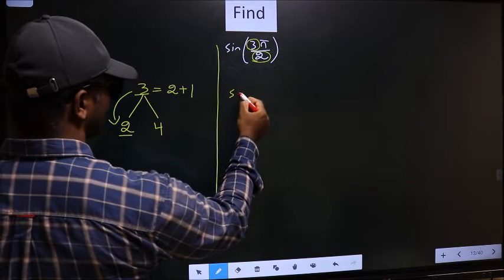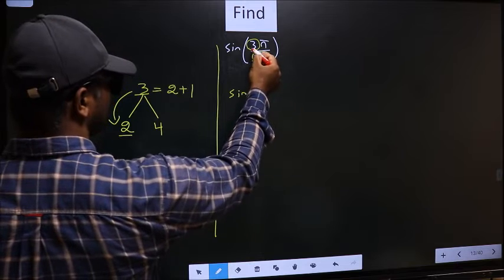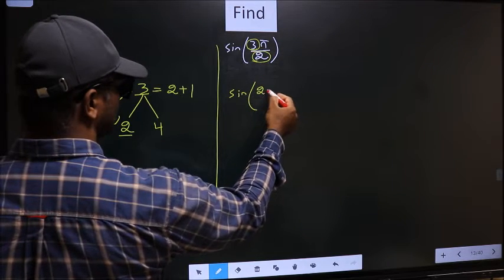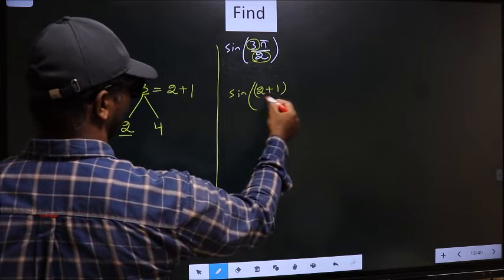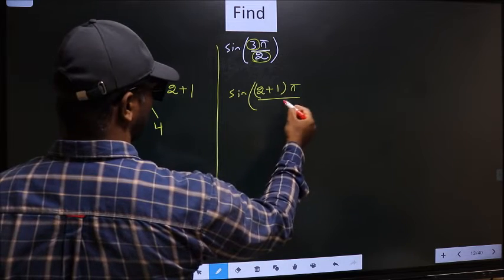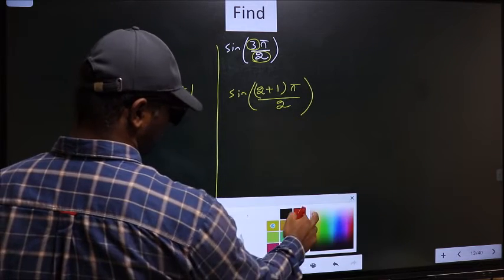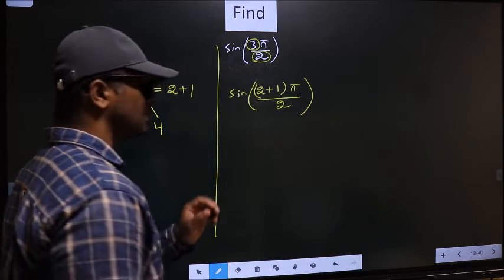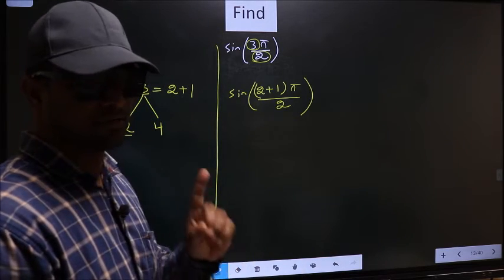So this will change to sin. In place of 3, now you should write 2 plus 1, π by 2. This is your step 1.